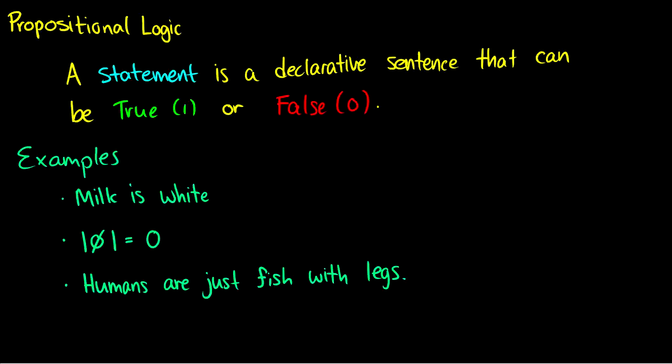Some examples of statements would be milk is white. This can be true or false. For the most part, it is true, but chocolate milk is brown, so that might not be white. Second example, the cardinality of the empty set is equal to zero. That is also true, so that is a statement. It can be true or false.